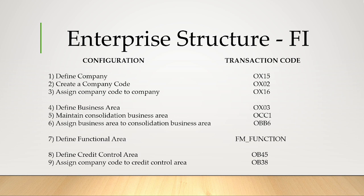Enterprise Structure FI — this is the first phase in FI. In this phase, we will do all these configurations: define company, create a company code, assign company code to company, define business area, maintain consolidation business area, assign business area to consolidation business area, define functional area, define credit control area, and assign company code to credit control area.